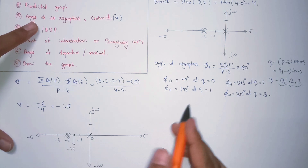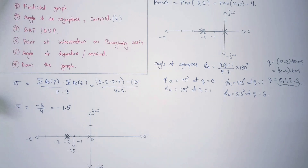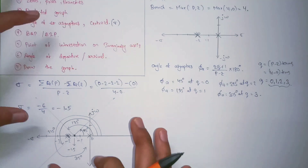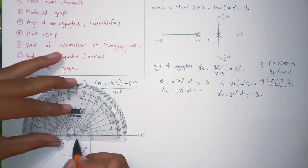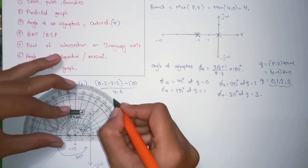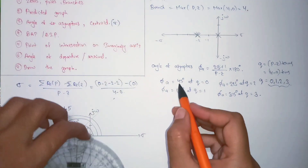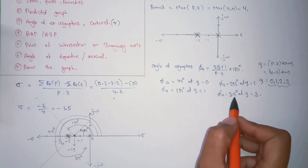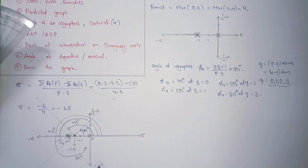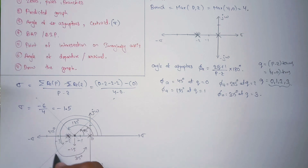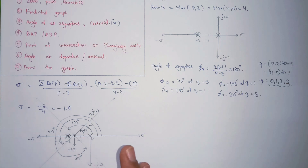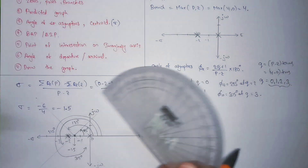The centroid is at minus 1.5, the angle of asymptotes are 45°, 135°, 225°, and 315°. I put this middle point at minus 1.5 and drew lines at 45° and 135° — these are opposite to each other, so it forms a straight line. I notated the angle of every line on this graph. This is the predicted graph. Always use a protractor in the exam because you have to use it to draw the angles on the main graph sheet.